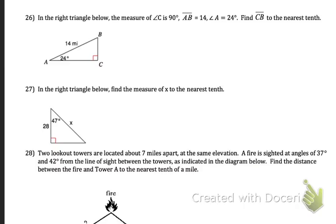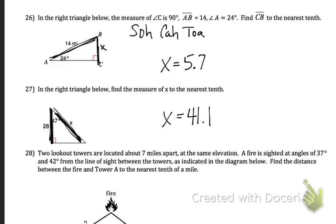Problem 26, in the right triangle below, the measurement of angle C is 90, the side AB is 14, and angle A is 24. Find CB to the nearest tenth. So we're looking for this side. It's a right triangle, so I can use SOH-CAH-TOA. I know my hypotenuse. I want to know my opposite, so you're going to use your sine function. 27, same idea. We're finding X. We know the adjacent, and we want to know the hypotenuse, so you're going to use cosine. Your answer for 26 is 5.7, and your answer for 27 is 41.1.